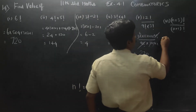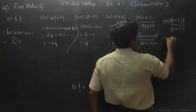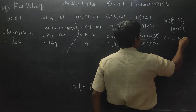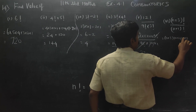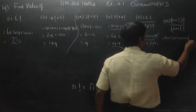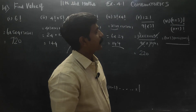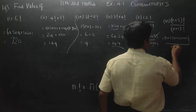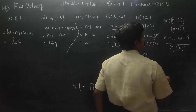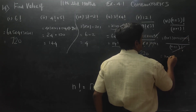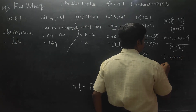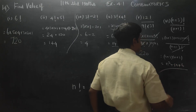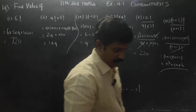n plus 3 factorial divided by n plus 1 factorial. Start with n plus 3: n plus 3 into n plus 2 into n plus 1 factorial, stop. Divide by n plus 1 factorial — cancel n plus 1 factorial. Your answer is n plus 3 into n plus 2. If you expand, the answer is n squared plus 5n plus 6, which is the final answer.